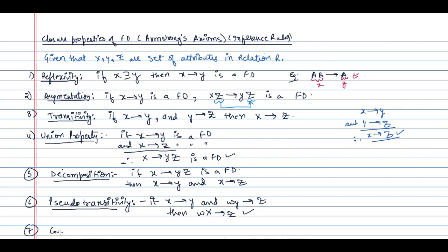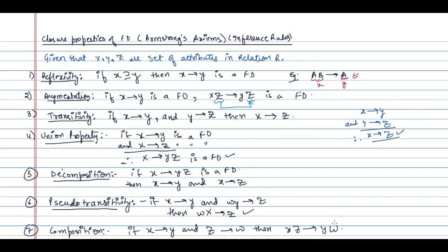The next property is called the composition property. It says if X determines Y and Z determines W, then XZ determines YW. This property also holds.